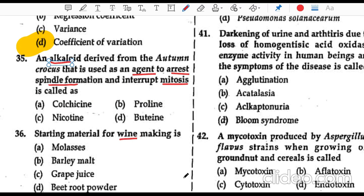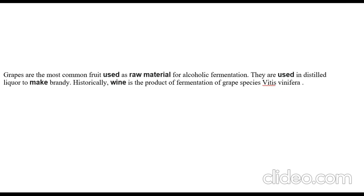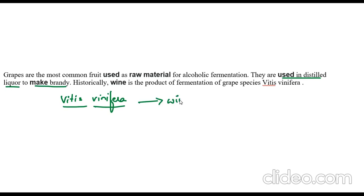Question number 36: the starting material for wine making is grape juice. Grapes are the most commonly used raw material for alcoholic fermentation. They are also used in distilled liquor to make brandy. Wine is produced by fermentation of the grape species Vitis vinifera.